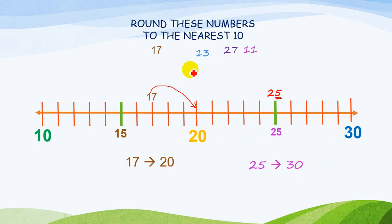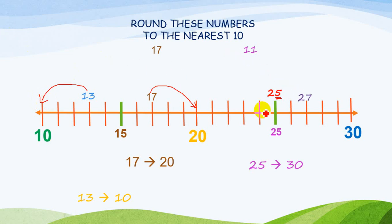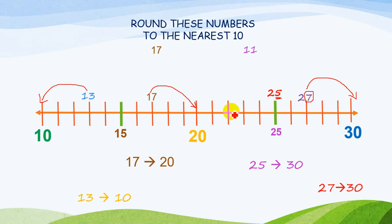Now I have number 13. You can easily see that 13 is very near to 10, so I'm going to change it to 10. Then I have number 27. The digit 7 is present on the units place, so I'm going to round it up to the nearest ten — that is 30.